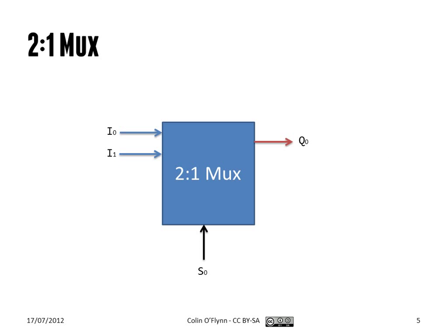With the multiplexer, which we'll call a MUX for short, we have the notation of a two-to-one MUX — two inputs and one output. You can think of it as a switch that selects either input one or input two. If the select input is low, we select the first input; if the select input is high, we select the second input, I1.